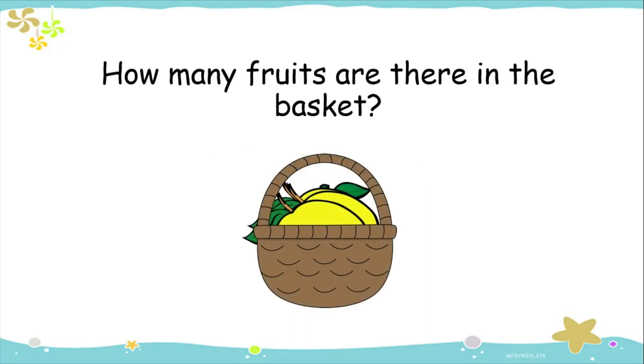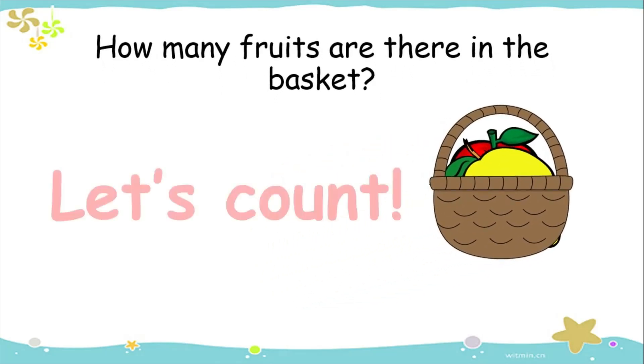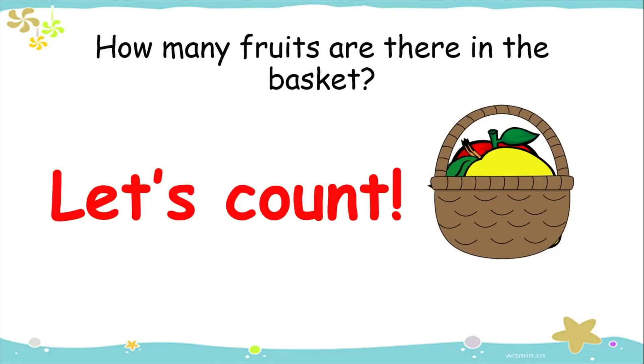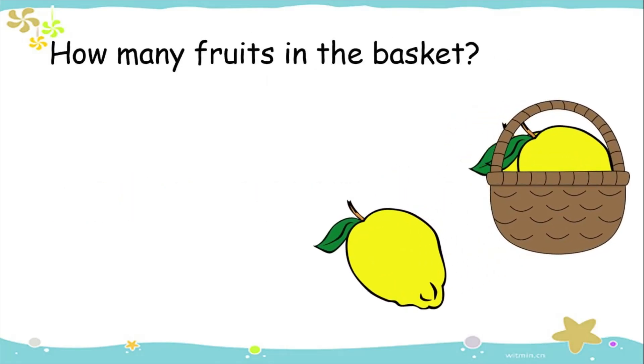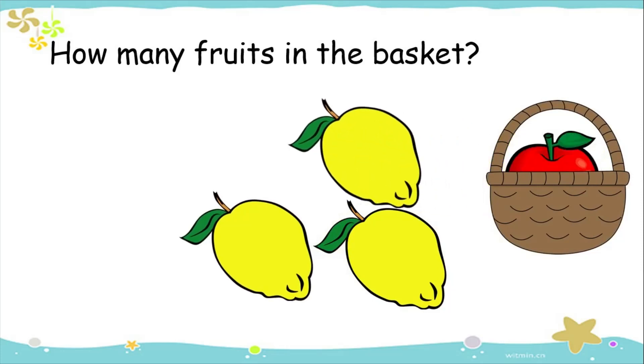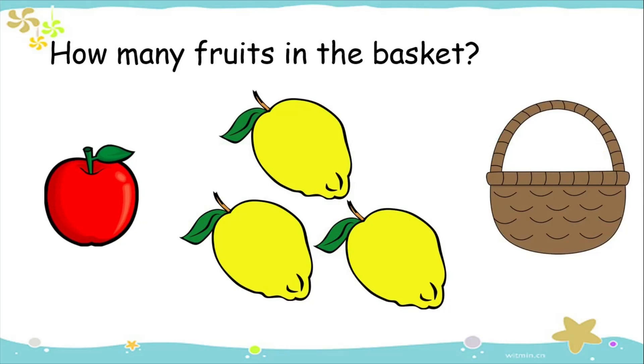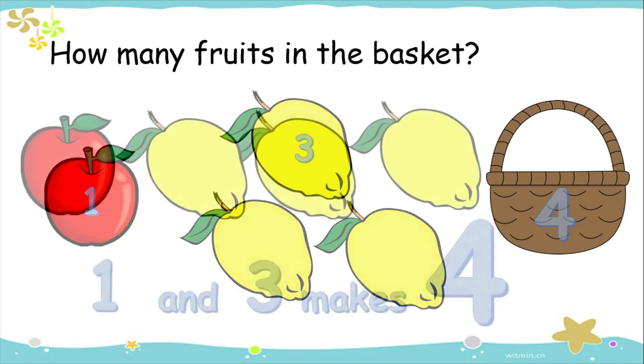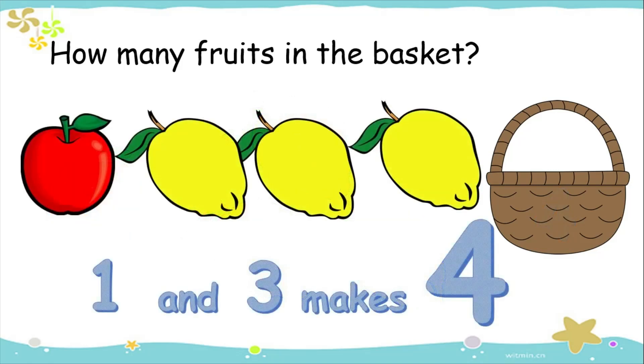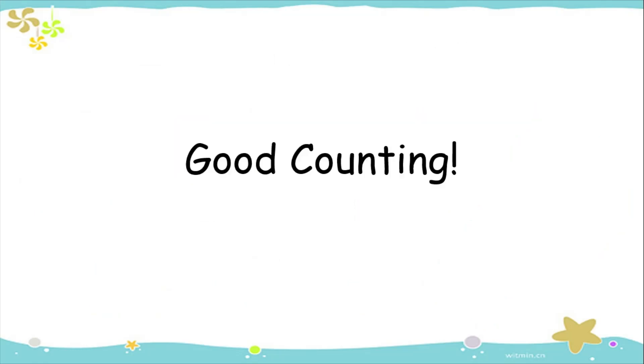How many fruits are there in the basket? Let's count! There's one apple and three lemons. How many fruits are there in all? There are four. That means one and three makes four. Good counting!